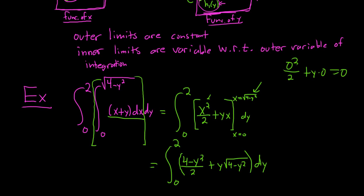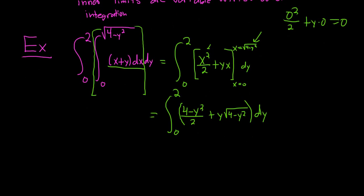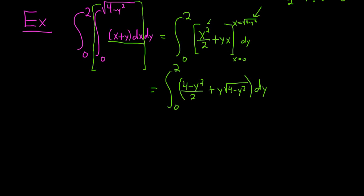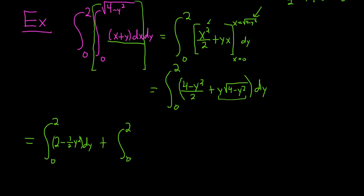Now we have to integrate this with respect to y. I'll break this up into two integrals: the first is the integral from 0 to 2 of (2 minus one-half y squared) dy, and the second is the integral from 0 to 2 of y times the square root of 4 minus y squared dy. The reason I broke it up is that the second one requires a u-substitution.